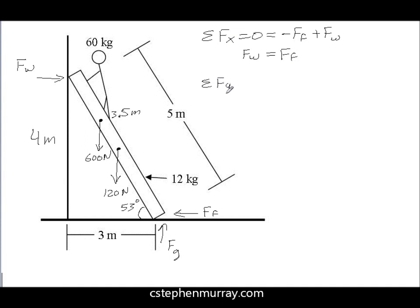Well then, from the y direction, it should be, and I'm just going to do this pretty easily, you should be able to see that all the down forces, which are the 600 and the 120, equals the normal force of the ground up. So, the force of the ground must be 720 newtons. So, now we have some information.